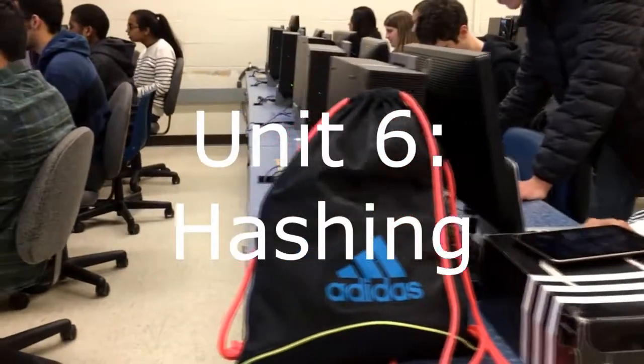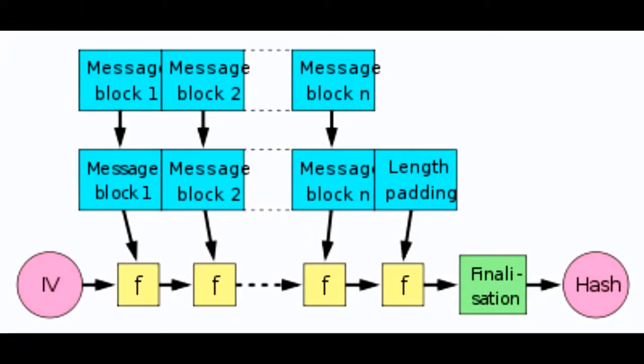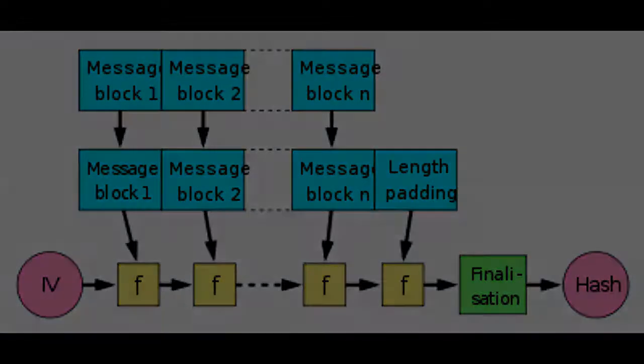Unit 6 teaches hashing, a process whereby information may be passed through a function and stored in an array, arraylist, or linked list. This function may then be used to quickly retrieve the data much more efficiently than using other sorting algorithms.